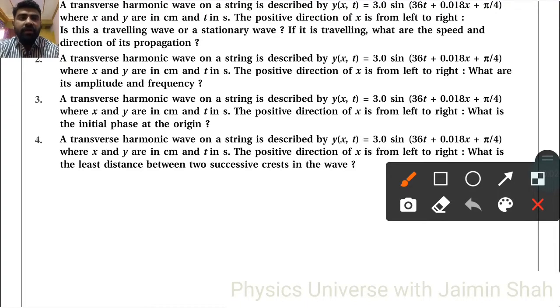A transverse harmonic wave on a string is described by y(x,t) equals 3 sin(36t + 0.018x + π/4), where x and y are in centimeter and t in second. The positive direction of x is from left to right. Is this traveling wave or a stationary wave? If it is traveling, what are the speed and direction of its propagation?